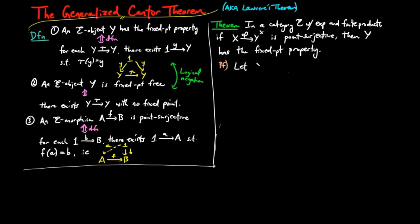For the proof, let tau be an endomorphism from y to y, we want to show that tau has a fixed point. Recall the construction of c given in the diagonalization argument on the left.